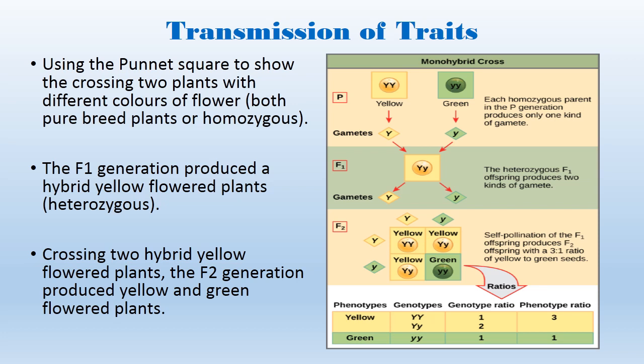Each homozygous parent in the P generation introduces only one kind of gamete. Once they are crossed together, all four offspring produced are heterozygous, having two different alleles making up the gene — capital Y from the yellow plant and small y from the green plant. So all four offspring in the F1 generation have the same genotype: one capital letter Y and one small letter y. The F1 generation produces hybrid yellow flowered plants — in other words, heterozygous offspring.